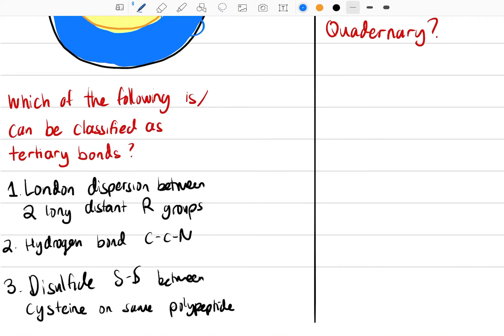Which of the following can be classified as tertiary bonds? The first one we have is London dispersion forces between two long-distance R-groups. Is that going to be a tertiary bond?